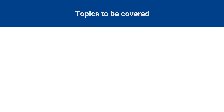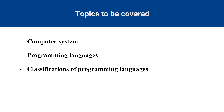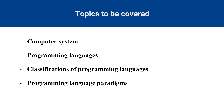In this lesson, we'll be covering the following topics: Computer system — what are the main components of a computer and how they work together? Programming language — what are the tools that programmers use to create software applications? Classifications of programming language — what are the different categories of programming languages and how they differ in syntax, semantics and features? Programming language paradigms — what are the different ways of organizing and structuring code and logic? By the end of this lesson, you will have a clear overview of programming and the various types of programming languages and paradigms. This will help you to build a strong foundation for your programming journey.